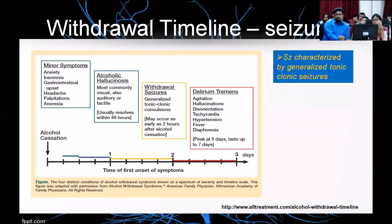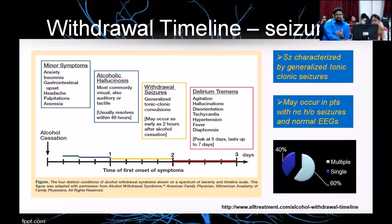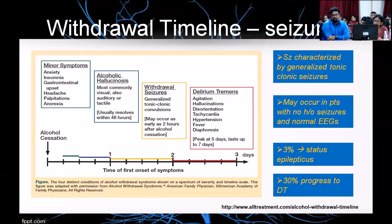Seizures are one of the complicated withdrawals. They are generally characterized by tonic-clonic seizures, though partial seizures may occur. These may occur in patients with absolutely no history of seizure disorder and completely normal EEGs. However, if somebody does have a history of seizure disorder, their chances are more likely. Around 60% present with multiple seizures, varying between 2 to 6 episodes. Around 3% of those who have a withdrawal seizure could go into status epilepticus, and 30% could progress to delirium tremens.